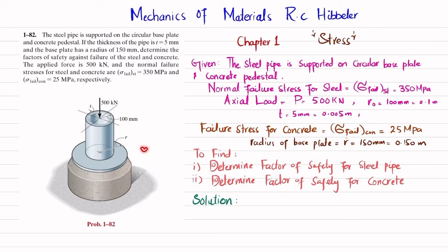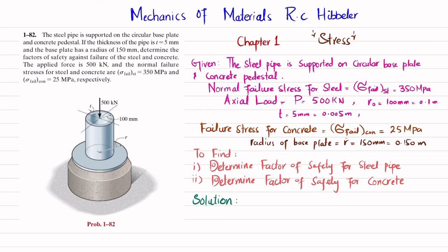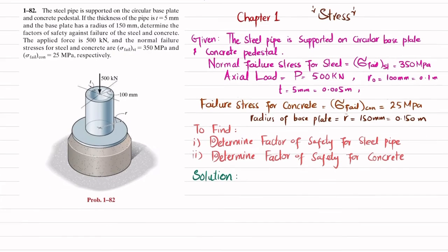We need to determine the factor of safety against failure for steel and concrete. The normal failure stresses are 350 megapascals for steel and 25 megapascals for concrete. You can see in the figure: the pipe has an outer radius of 100 millimeters and thickness of 5 millimeters. It is acted upon by an axial load of 500 kilonewtons and is mounted on a base plate, which is mounted on a concrete pedestal.